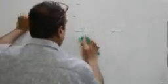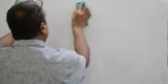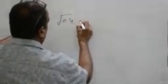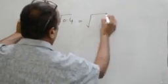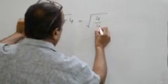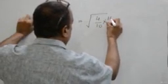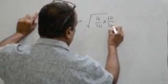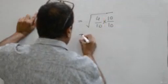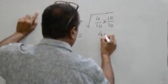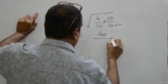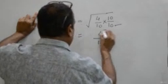Many people solve it like that. The method is 0.4 can also be written as 4 upon 10. If we multiply numerator and denominator by 10, it will convert the denominator into a perfect square.